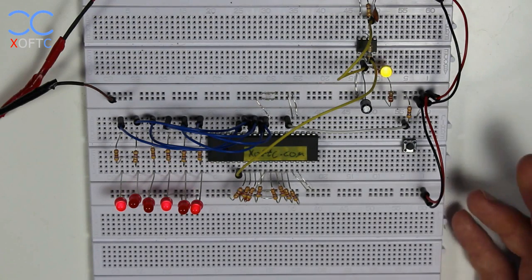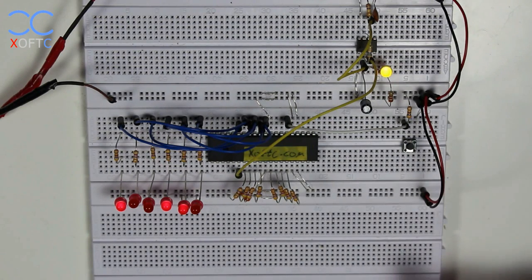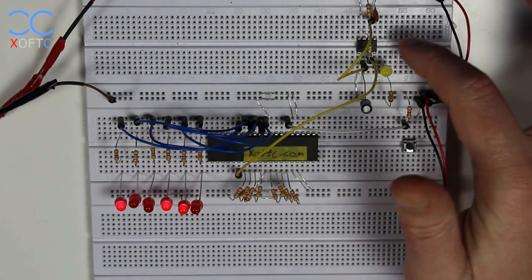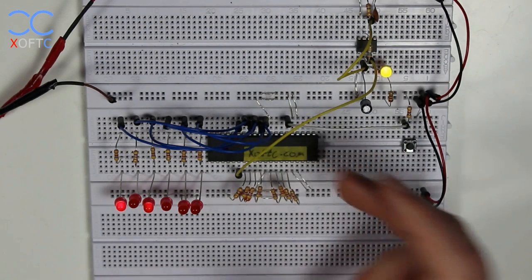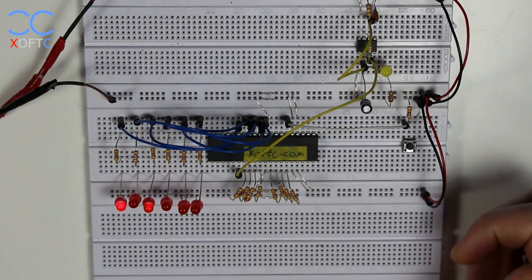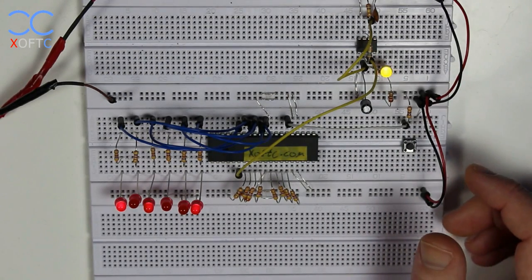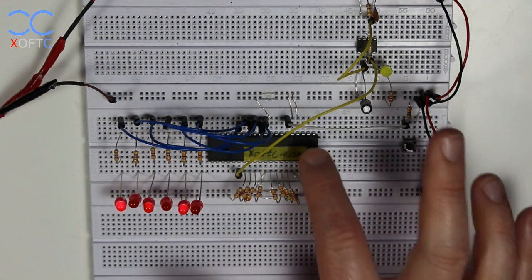So before we start, let's see what we have on the breadboard here. I have a 555 timer and it's generating pulses to the CPU, to the clock, at about one Hertz, a little bit more.